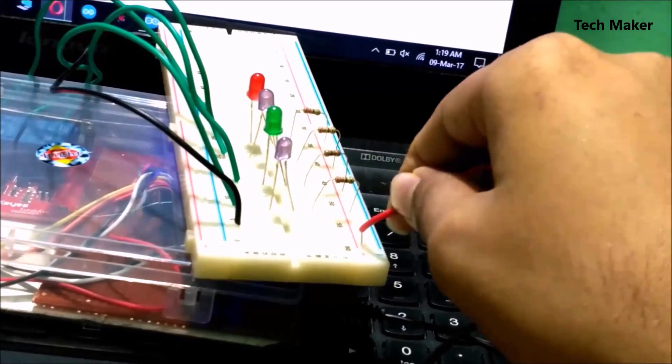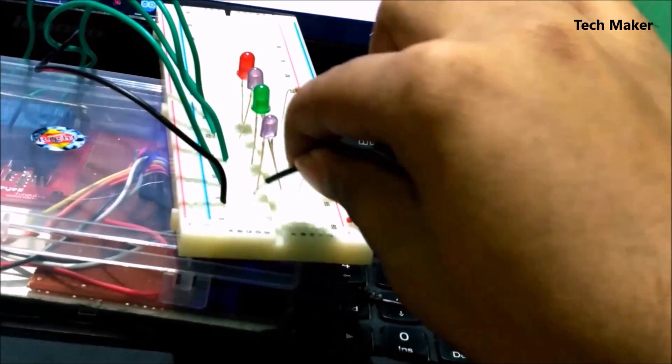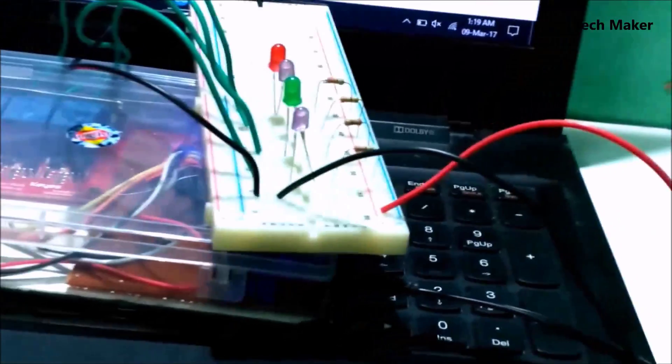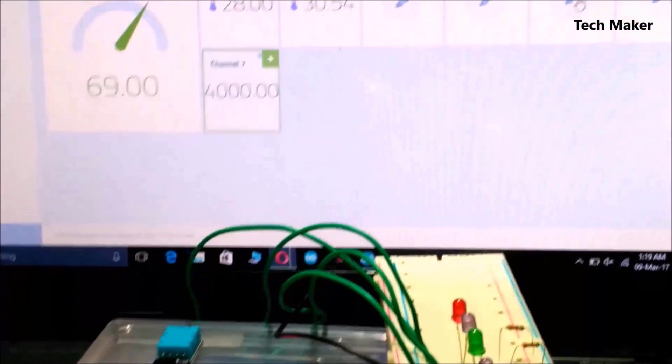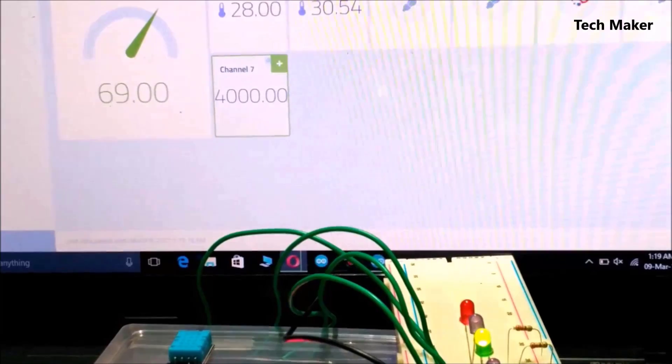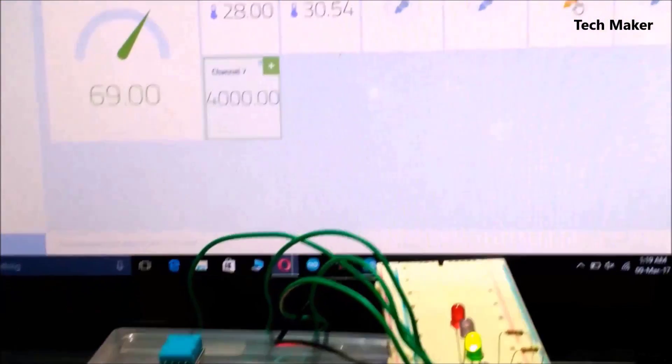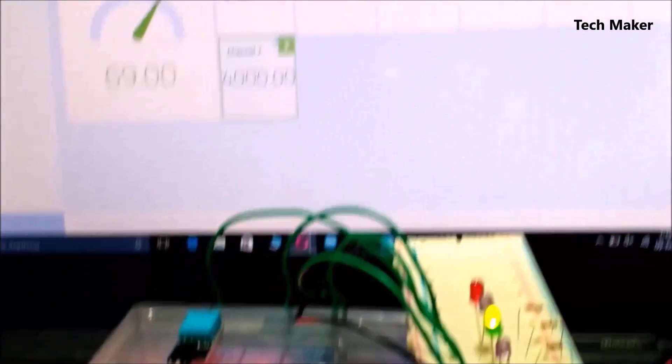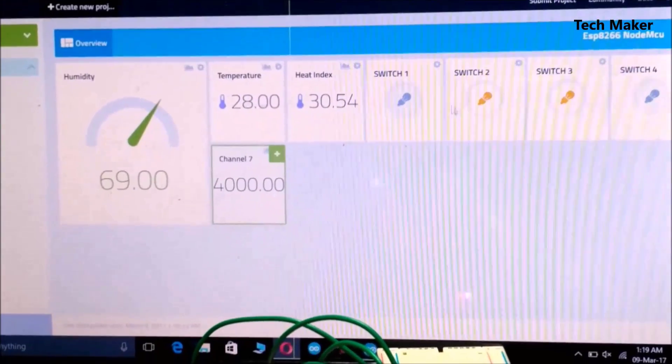Now you can see the Cayenne dashboard in the display. For the interface, I am using the Cayenne platform. This is the dashboard. Now I am clicking on switch 3; the third LED glows. You can see it there. And 2.